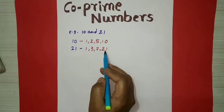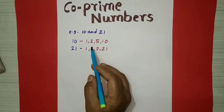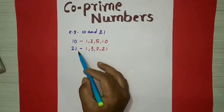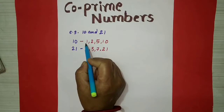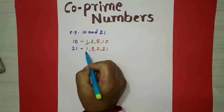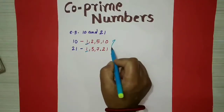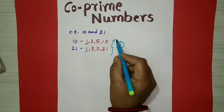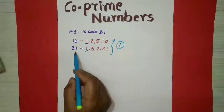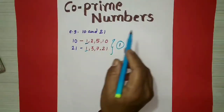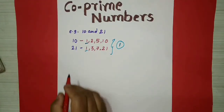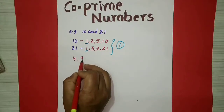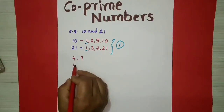The common factor to both 10 and 21 is only 1. So these two, 10 and 21, are said to be co-prime numbers. One more example we will take: 4 and 9.